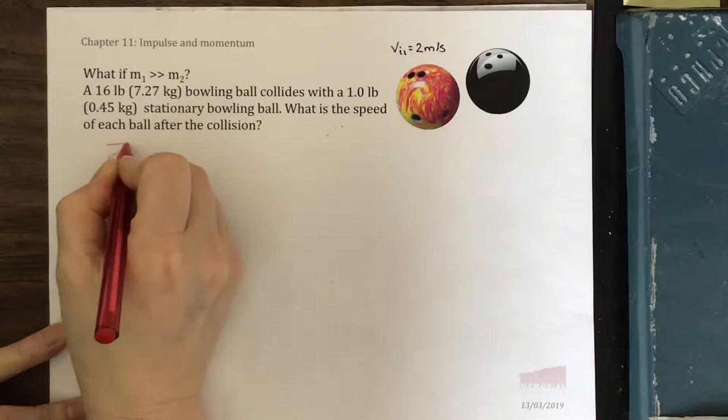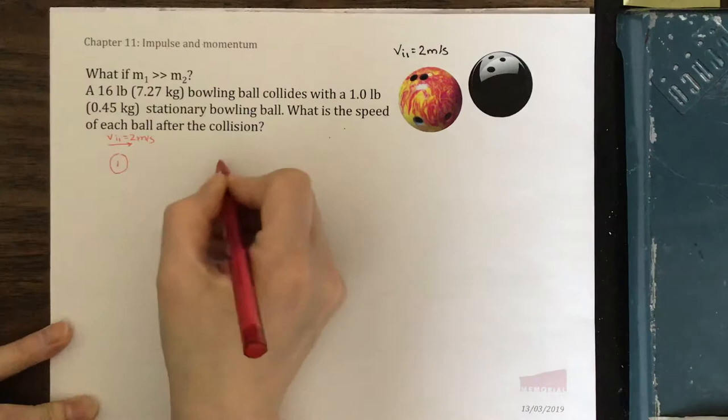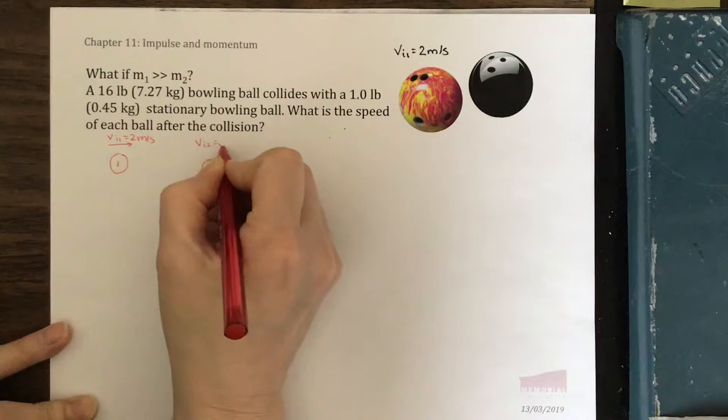Here's ball 1 moving with speed 2 meters per second, v initial 1, 2 meters per second. Collides with ball 2 that's initially stationary, v initial 2 equals 0. What is the speed of each ball after the collision?